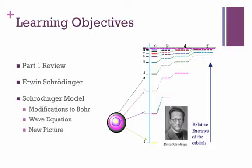And then finally, we'll focus on the model itself. We'll talk about how the Schrödinger model modified the Bohr model to include new science, how it hinges around the concept of the wave equation, and how this wave equation creates a new picture for what an atom actually looks like. If you recall, that was the fundamental flaw with the Bohr model - it didn't create a picture.